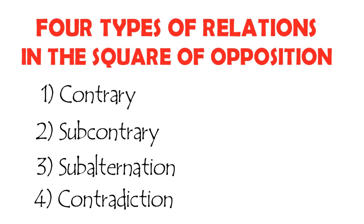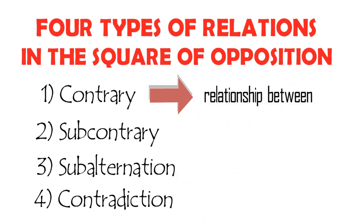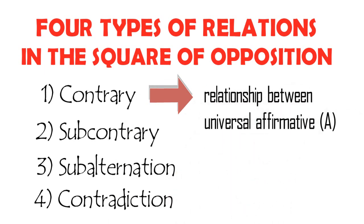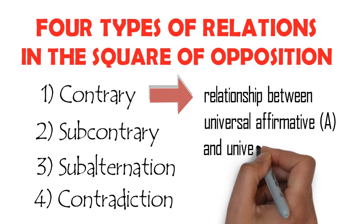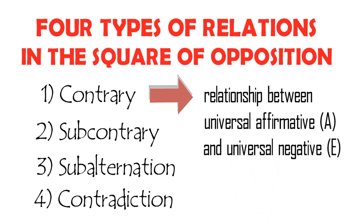Just to provide a quick recap of our previous discussion: contrary is the relationship between universal affirmative and universal negative propositions. Hence, there is only one pair in contrary, that is A and E, and both are universal propositions, but one is affirmative and the other negative.